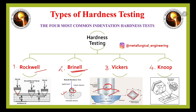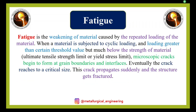When the Vickers indenter deforms the material, a specific impression appears on the surface. We measure its width and height — in the form of d1, d2, h1, or h2 — to determine the Vickers hardness. The fourth type is Knoop hardness, where the indenter has a distinct elongated shape, and the resulting indentation is known as the Knoop hardness measurement.